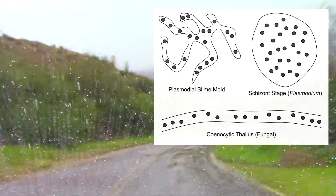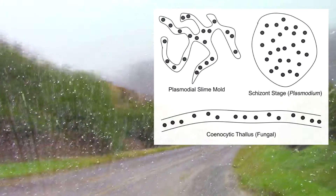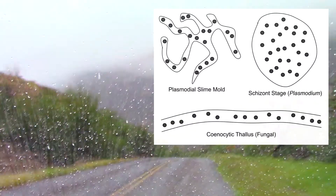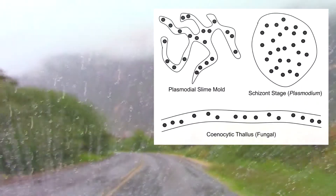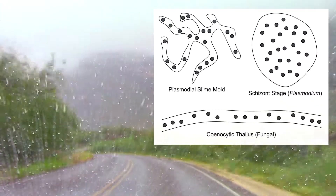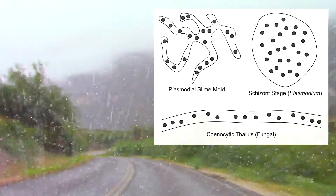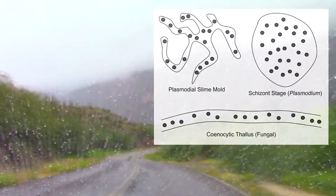This is then followed by multiple rounds of cytokinesis that converts the relatively large multi-nucleated cell — the schizont stage — into individual single-nuclei cells.